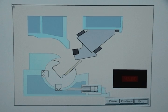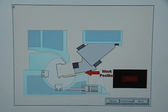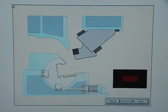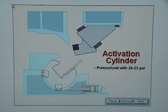When the press reaches the first program position, the activation cylinder moves the rotor to the work position. When the press reaches the second program position, the activation cylinder moves the rotor to the home position. The activation cylinder must be pressurized with between 20 and 25 pounds of air to operate properly.